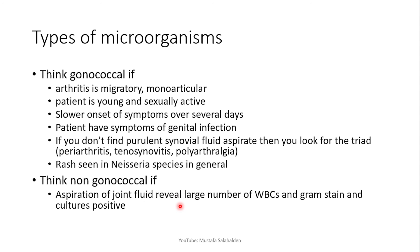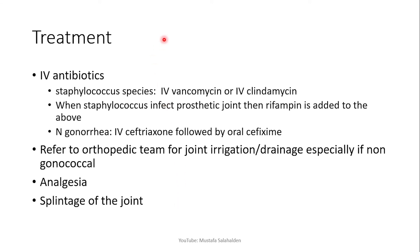Non-gonococcal septic arthritis is very aggressive, so give antibiotics quickly without waiting for aspiration analysis. For staphylococcal species, give IV vancomycin or IV clindamycin; if the infection involves a prosthetic joint, add rifampicin to either of these. For Neisseria gonorrhoeae, give IV ceftriaxone followed by oral cefixime. Refer the patient to the orthopedic team for joint irrigation and drainage, especially for non-gonococcal infection, and provide analgesia and splint the joint.